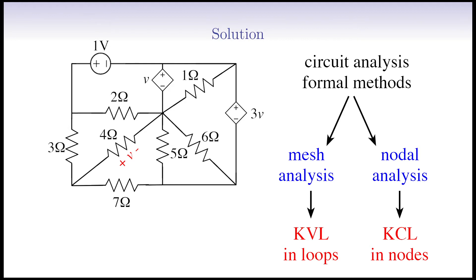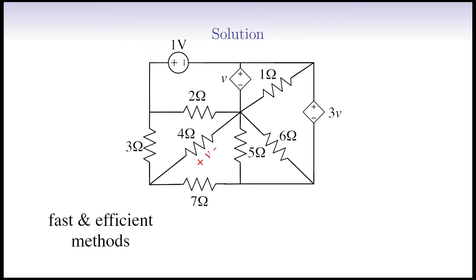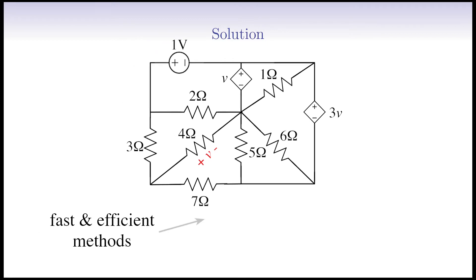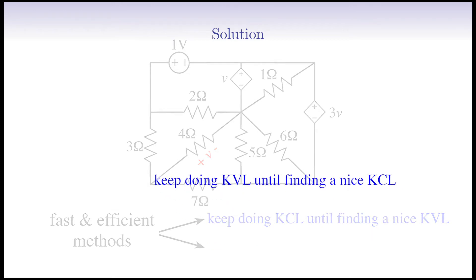Instead, if a desired unknown voltage or current for a particular branch is to be found, we employ just the right required number of KCL and KVL on some preferred nodes and loops, and find the desired unknown variable. In some cases, we may also take advantage of symmetry to simplify the circuit. In the previous Physics Puzzle, we talked about two approaches that help us a lot in order to fastly solve a circuit problem. The first approach that we learned was, keep doing KCL until finding a nice KVL. Today, we're going to learn about the second approach which is, keep doing KVL until finding a nice KCL.